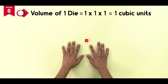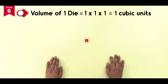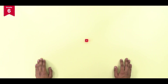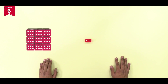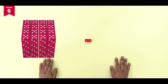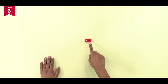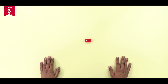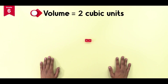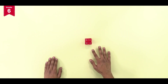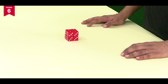If we take one side of this die equal to one unit, then the volume of this die will be equal to one cubic unit. Let us join some more dice and make an even bigger shape. As we attach more dice, the volume of the shape formed will increase. The volume of this shape is equal to the number of dice used, so the volume of this shape will be equal to two cubic units.